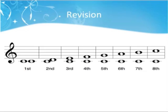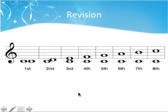Here's a little bit of revision first. We have our major scale and we also have the scale degrees: 1, 2, 3, 4, 5, 6, 7, 8, and we've got the intervals above that. So here's our perfect unison, our major 2nd, major 3rd, perfect 4th, perfect 5th, etc.